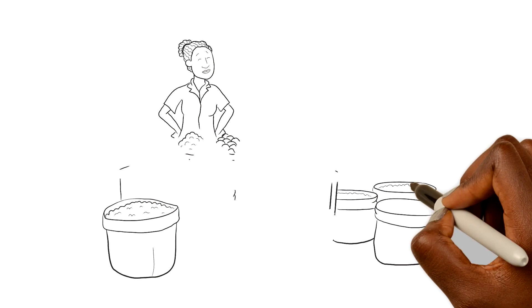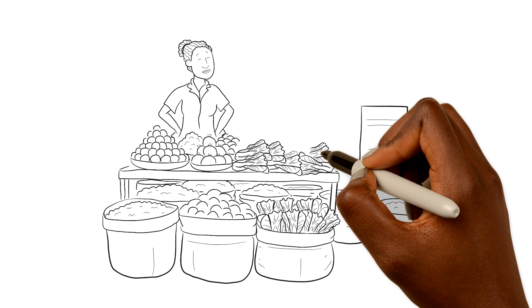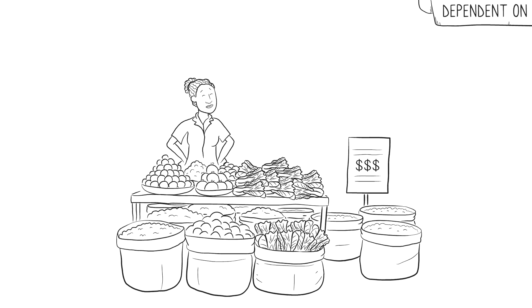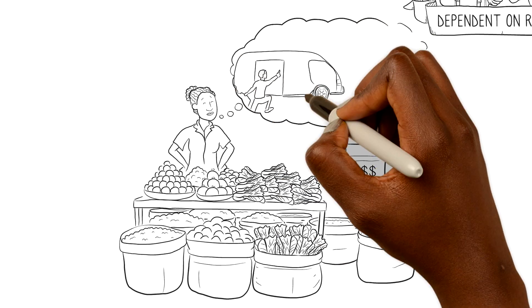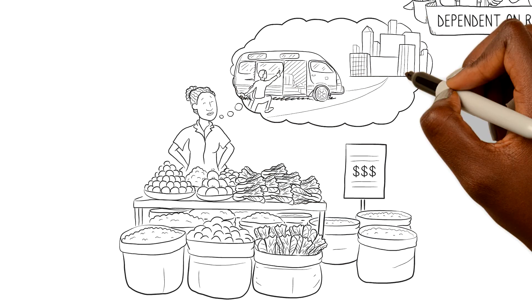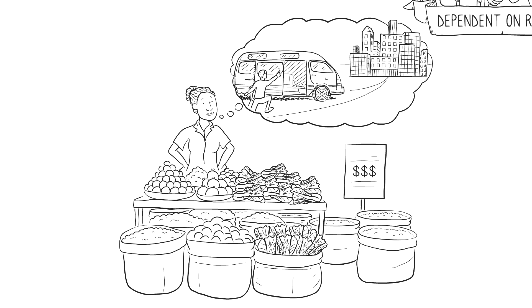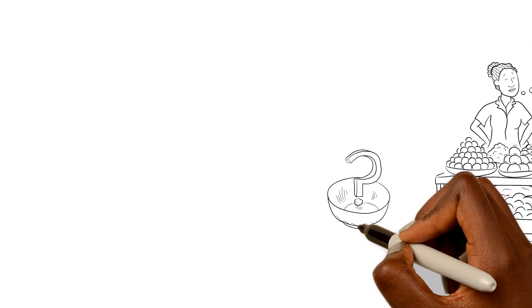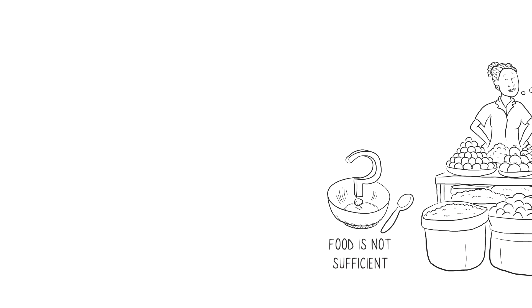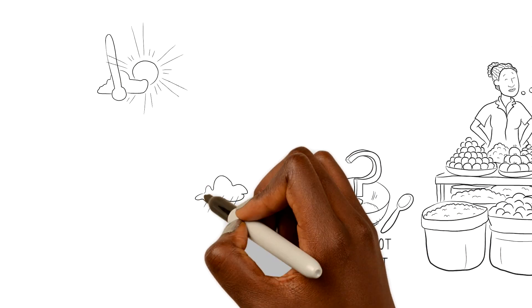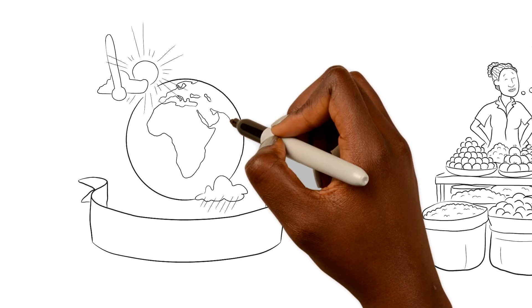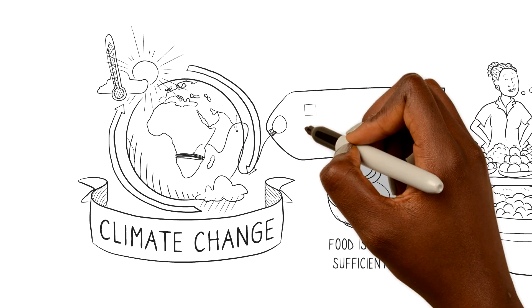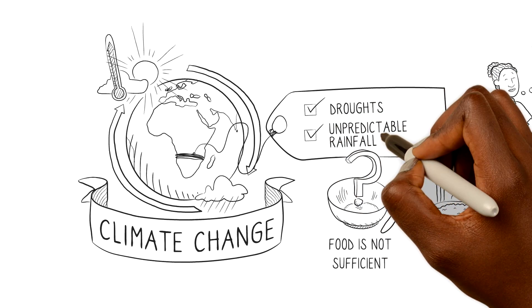Jane sells most of her crops as well as eggs, and she keeps some for their own consumption. Farming is not that profitable anymore, which is why her husband is working in a nearby city. Yet the food she produces is not sufficient for the family, and their diet is monotonous. On top of that, Jane's community is increasingly exposed to changes to the climate like droughts and unpredictable rainfall patterns.